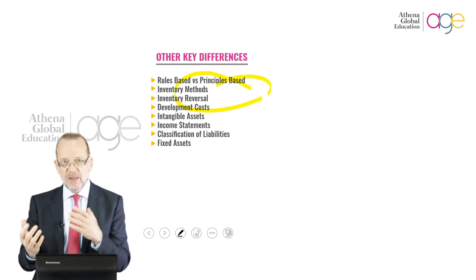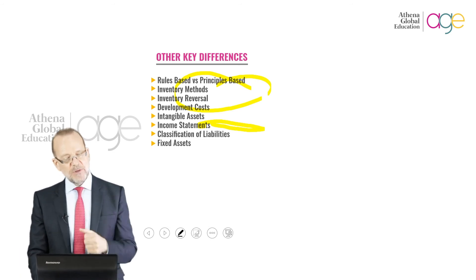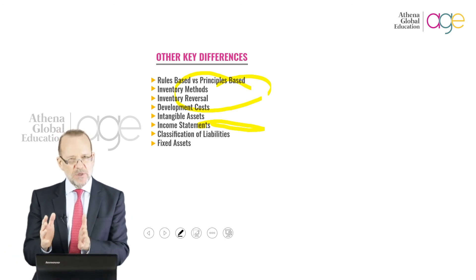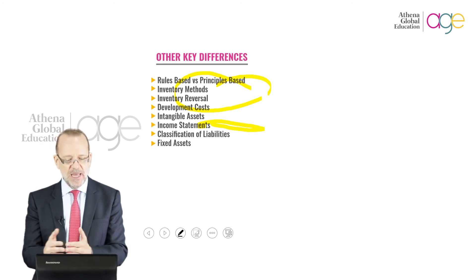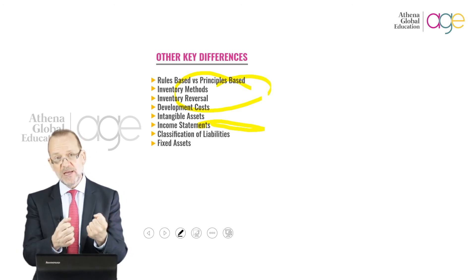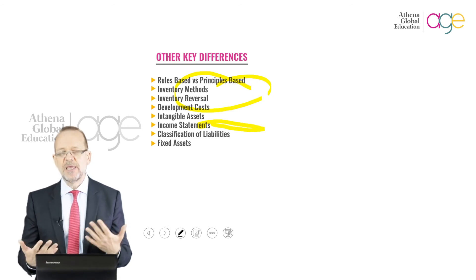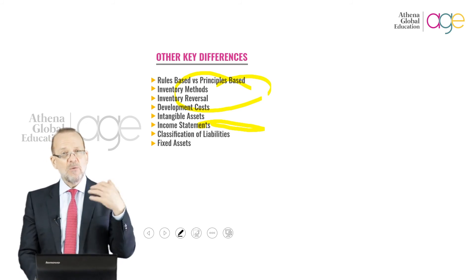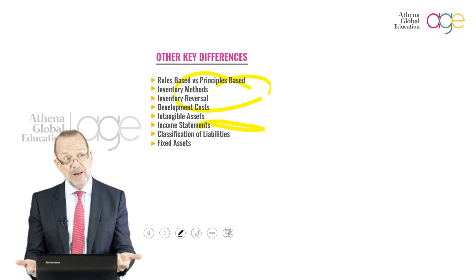Developmental costs — when you think about research and development — are treated differently. Intangibles, income statements, and revenue recognition are also areas of difference. Within your income statement, you're going to have a more principally balanced way of recognizing revenue under IFRS as opposed to GAAP's rules-based approach. You want to understand what basis your financial statements were prepared upon when you're reviewing them. There will also be variations when it comes to fixed assets — how we report assets is hugely important, including the life of the assets and impairments, which would be the write-down of the value of an asset.